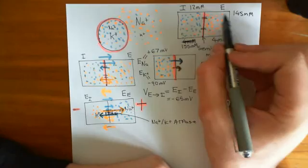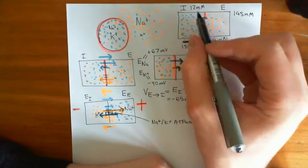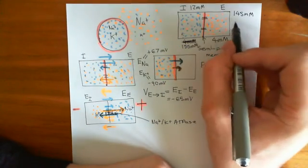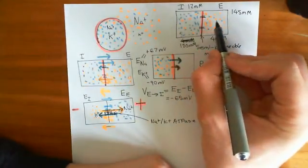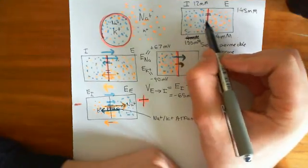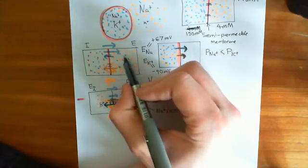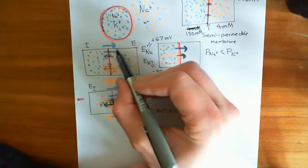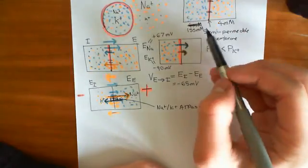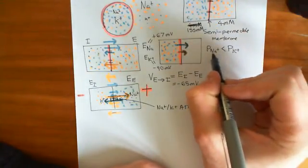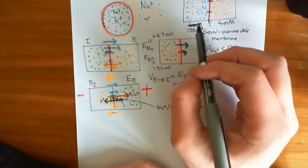The concentration gradients are around the same, but if you look at this, the concentration gradient for potassium is actually twice as big as the concentration gradient for sodium. That's another reason why the net movement of potassium from the intracellular compartment to the extracellular compartment is overall bigger than the net movement of sodium from the extracellular to the intracellular — firstly because the permeability of potassium is bigger than the permeability of sodium, but also because the concentration gradient is that bit bigger.